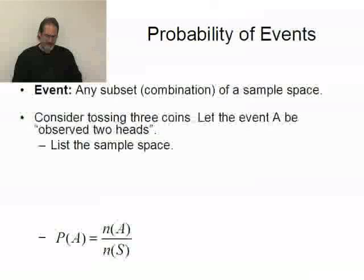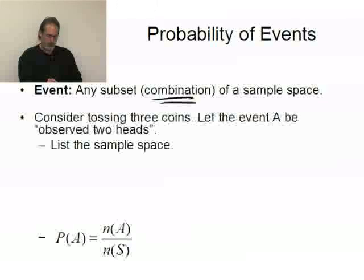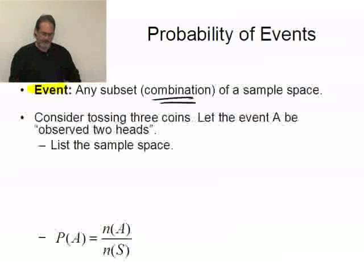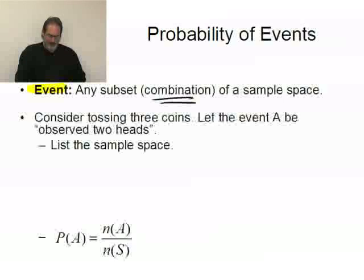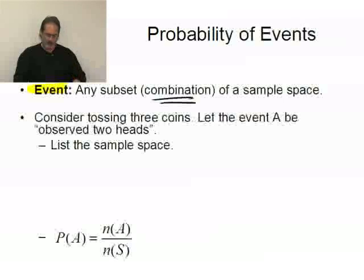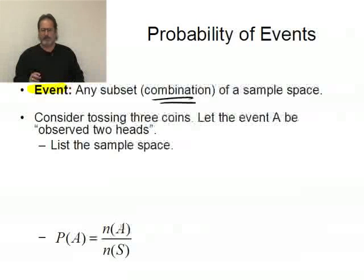Any subset or combination of a sample space is what we refer to as being an event. So an event is any subset, any combination of a sample space. Now let's consider tossing three coins. I want to let event A be observing two heads. I want to list the sample space and then find the probability of A. To list the sample space, I'm going to suggest using a probability tree — it makes it easier to keep track of things.